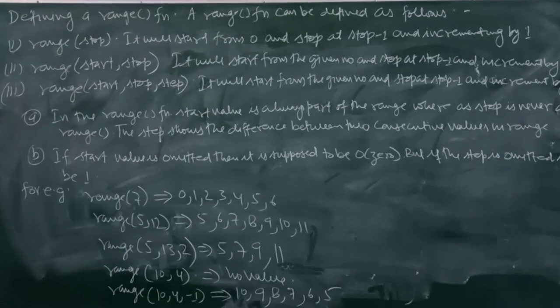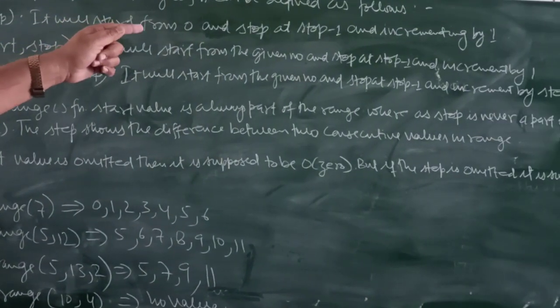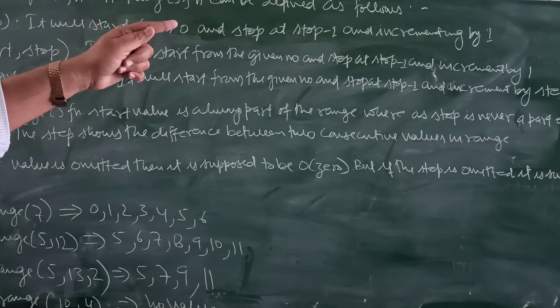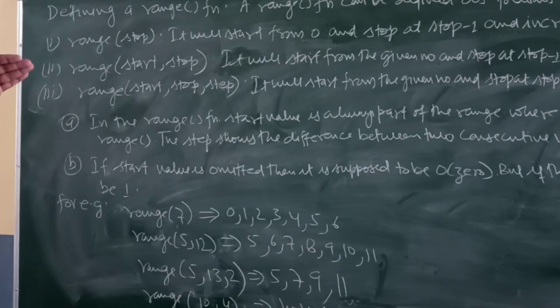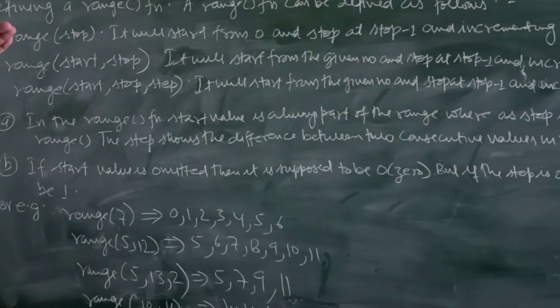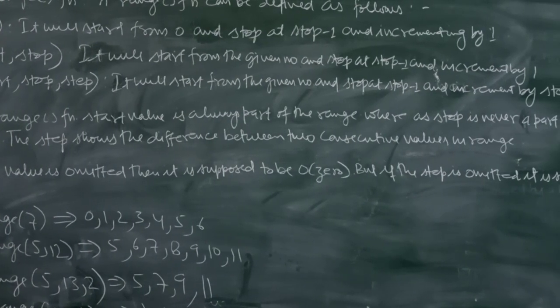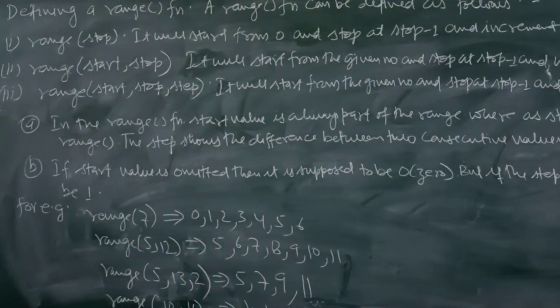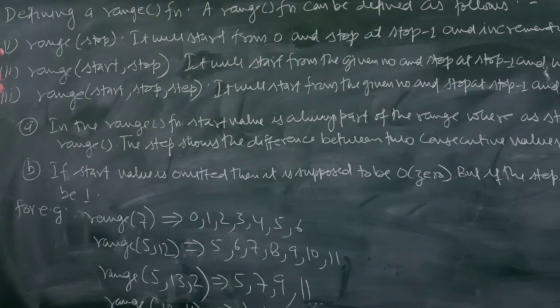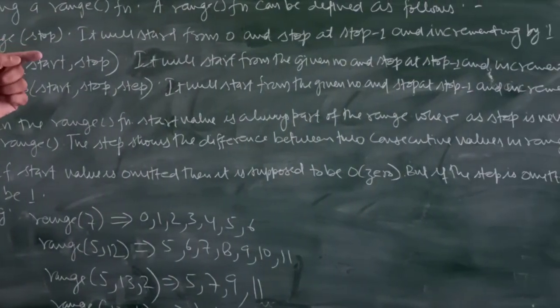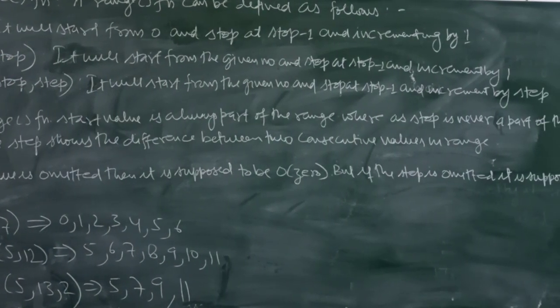First is range(stop): it will start from 0 and stop at stop minus 1, incrementing by 1. Second is range(start, stop): it will start from the given number and stop at stop minus 1, incrementing by 1. Third is range(start, stop, step): it will start from the given number and stop at stop minus 1, incrementing by step.